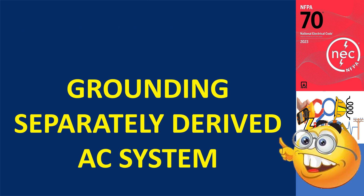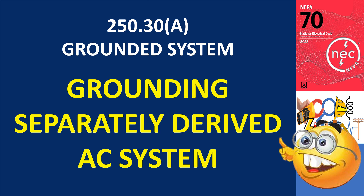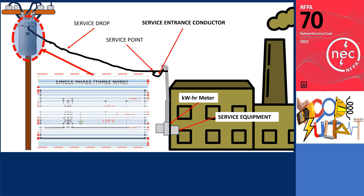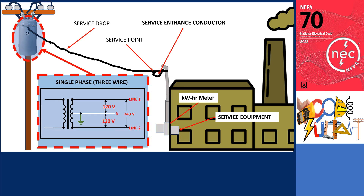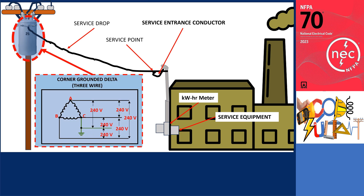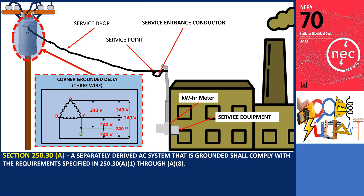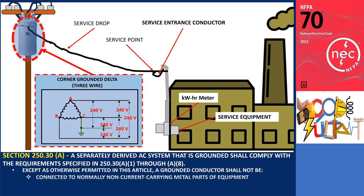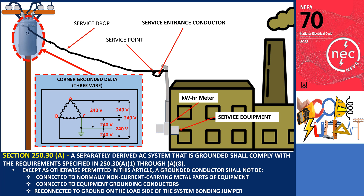Grounding a separately derived AC system connected to a service grounded system, as outlined in section 250.30: if the premises wiring is supplied by a service AC grounded system, such as a single-phase three-wire system, a three-phase Y four-wire system, a high-leg delta four-wire system, or a corner-grounded delta three-wire system, grounding for the separately derived system must comply with 250.30. Further, this section prohibits the grounded conductor from being connected to non-current carrying metal parts of equipment, being connected to the equipment grounding conductors, or being reconnected to the ground on the load side of the system bonding jumper.